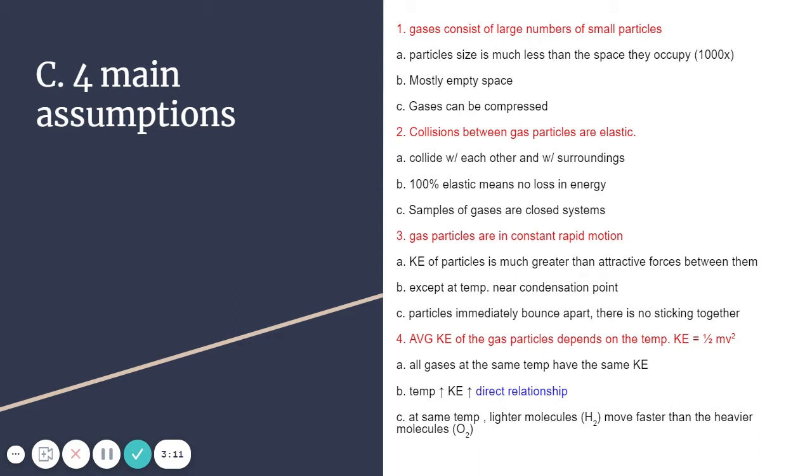Gas particles are in constant rapid motion. If they weren't in motion, they would be a liquid or a solid, or that would be significantly less motion. So yes, they are in constant, very rapid motion. They do move very fast. They have weak intermolecular forces.